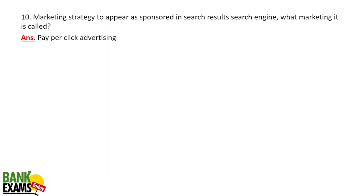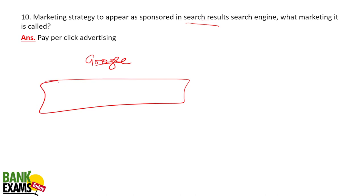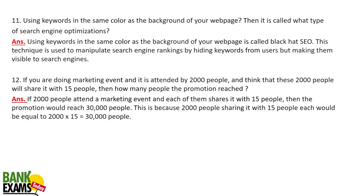A marketing strategy to appear as sponsored in search results: when you search on Google, you get sponsored results at the top — those are ads. Businesses bid for those positions. If I bid 10 rupees for the RRB keyword and someone else bids 12 rupees, they appear higher and I go lower. That is pay-per-click advertising, which happens on Google and also on Facebook.